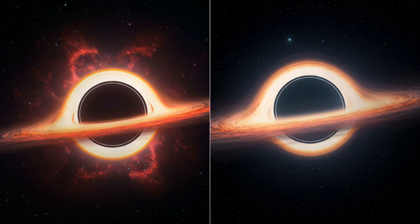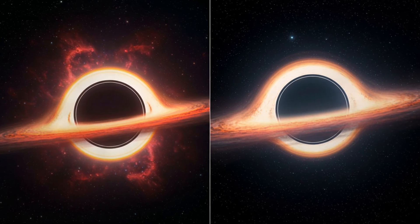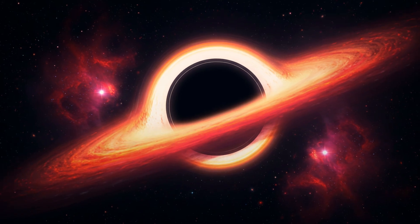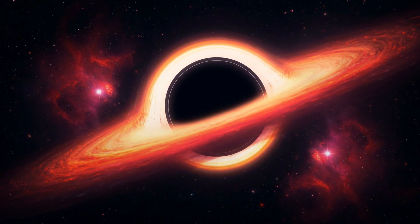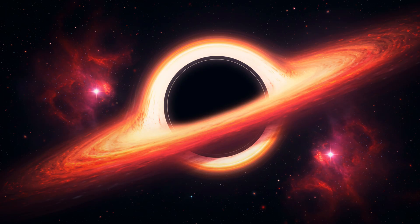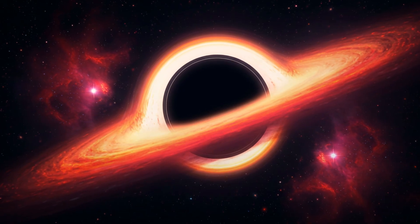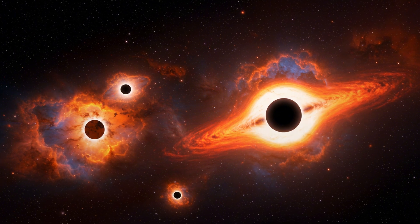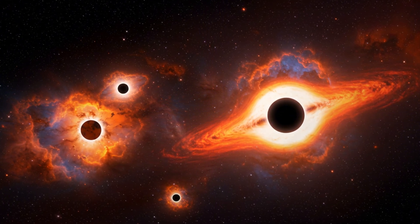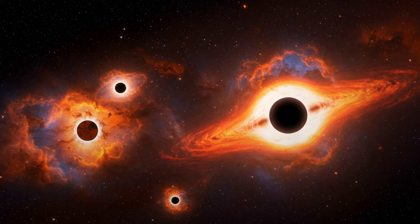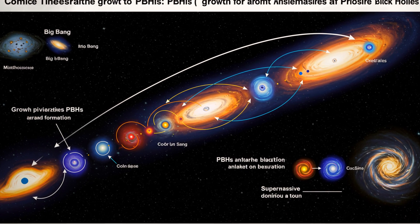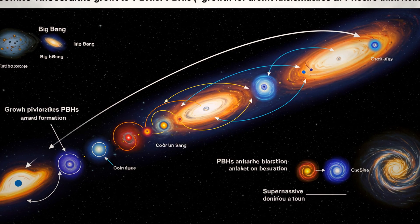So what are they? Some astronomers suggest they are young galaxies with active black holes at their centers. Others propose something more radical, that these red dots could actually be primordial black holes themselves, or galaxies built around them. If that's true, it means PBHs weren't rare cosmic accidents. They may have been common, shaping the very first galaxies and seeding the growth of the supermassive black holes we see today.